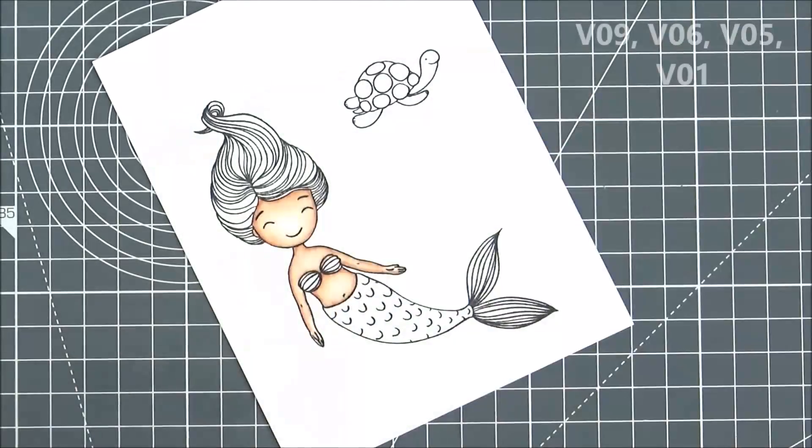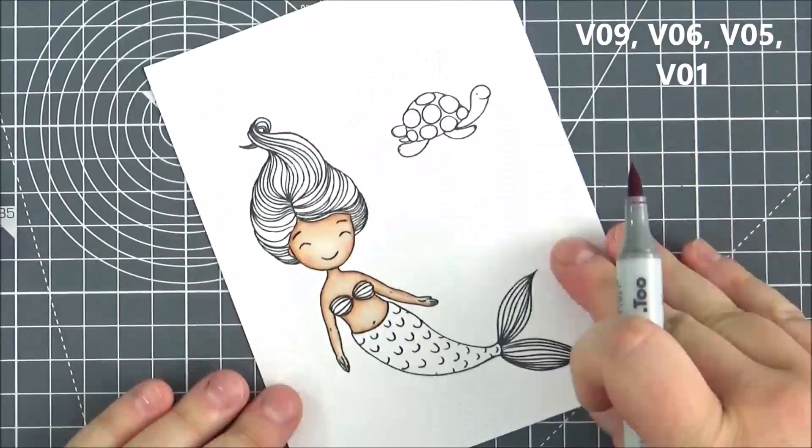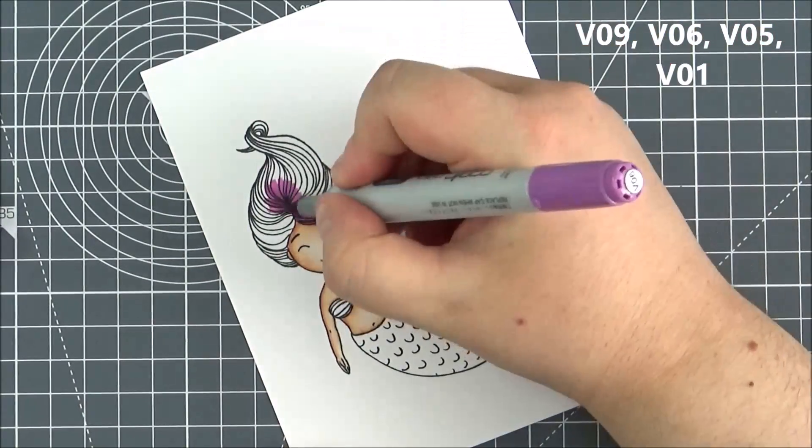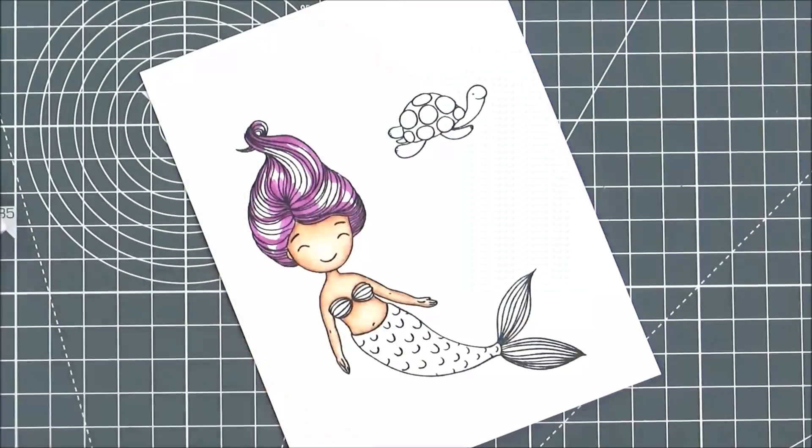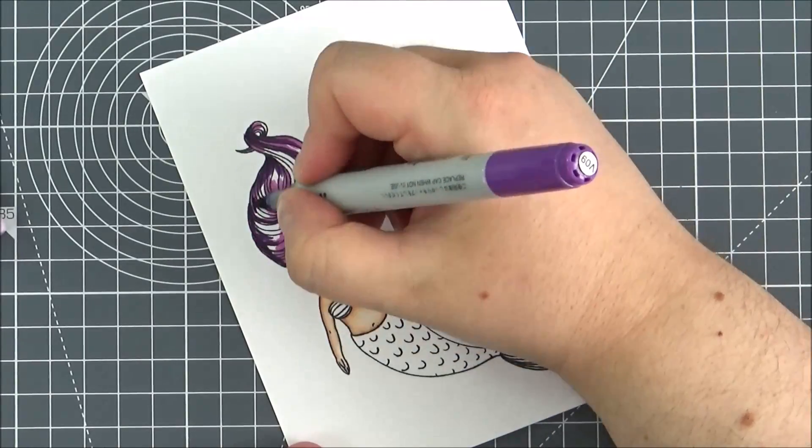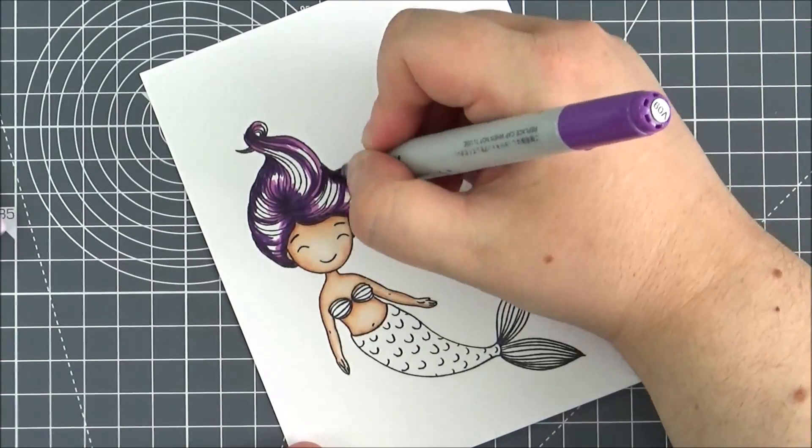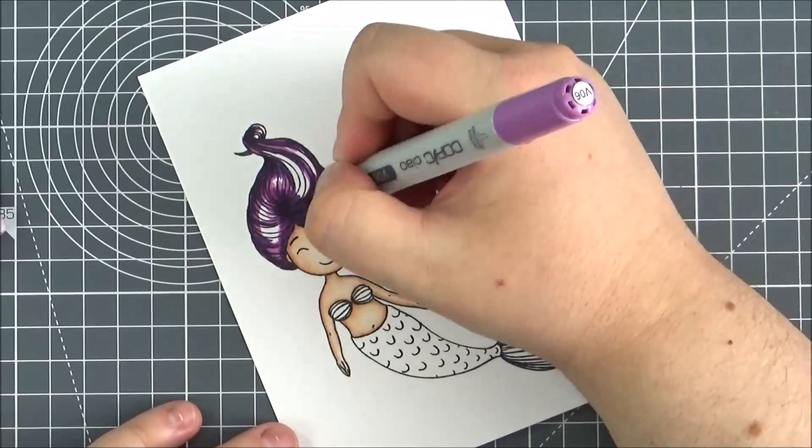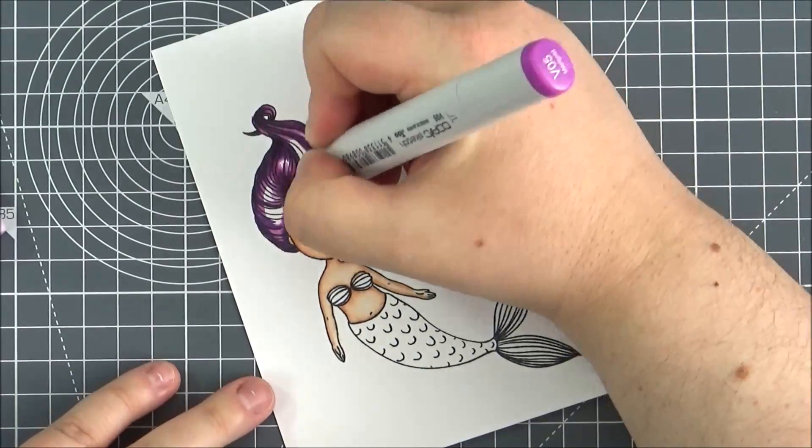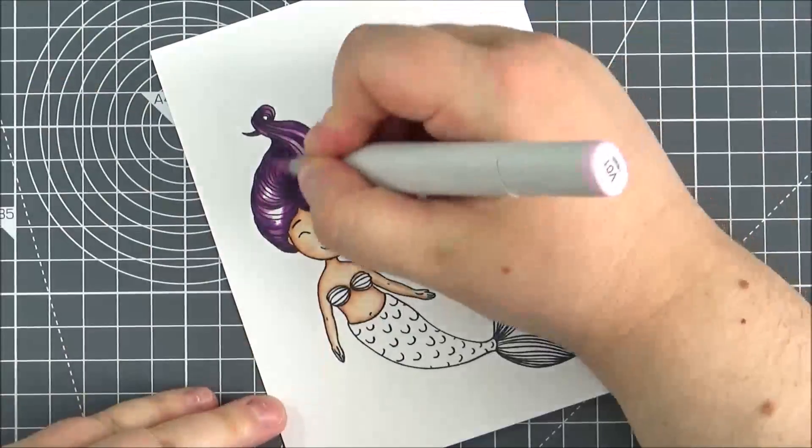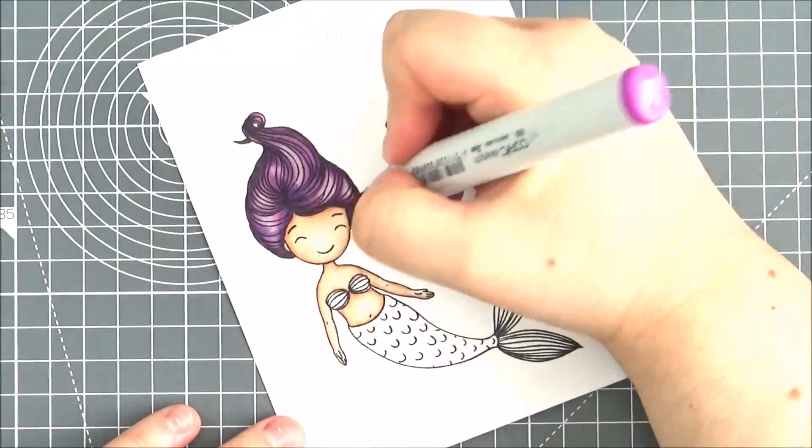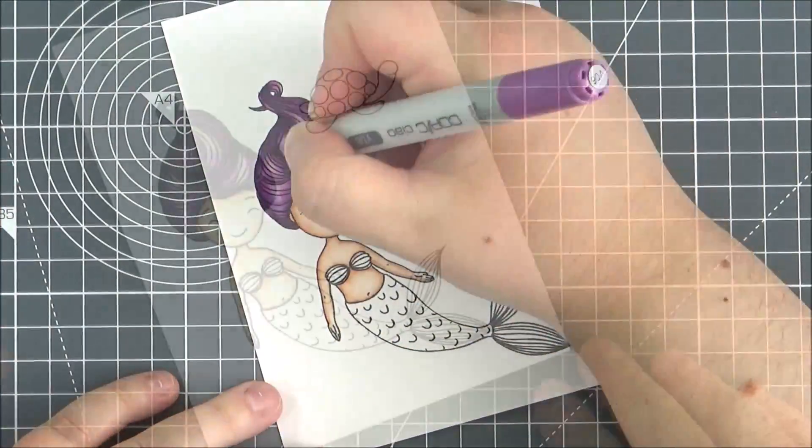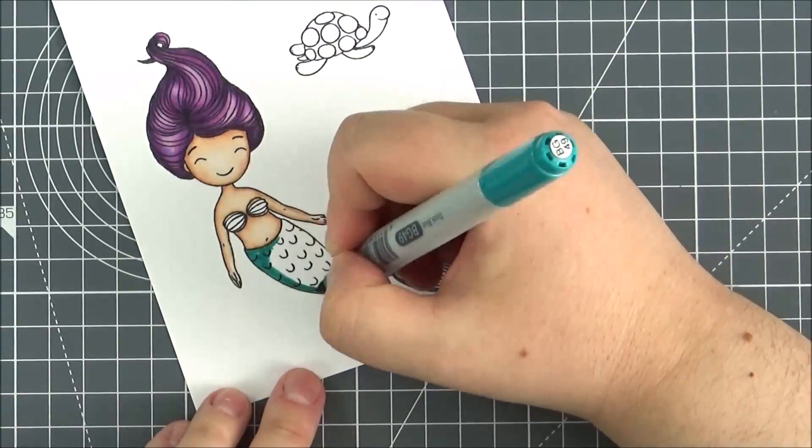Going from my darkest shade to my lightest for her hair using purple shades, this is a little bit of exception to the rule. I went in with my mid-tone first and then with my darkest, which is V09. Because it's really quite a dark color, I wanted it to blend a little bit easier. I find that if I go in with my mid-tone first and then add that on top, it blends a little bit better.